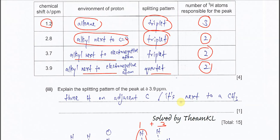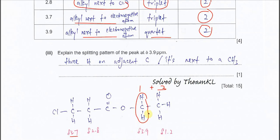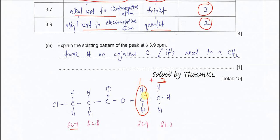Explain the splitting pattern for the peak at 3.9 ppm. This is straightforward. The splitting pattern is a quartet because the adjacent carbon has one, two, three protons — three protons on the adjacent carbon. So n+1 = 3+1 = 4, giving a quartet. Thank you.